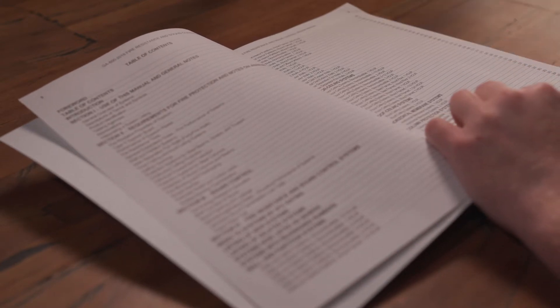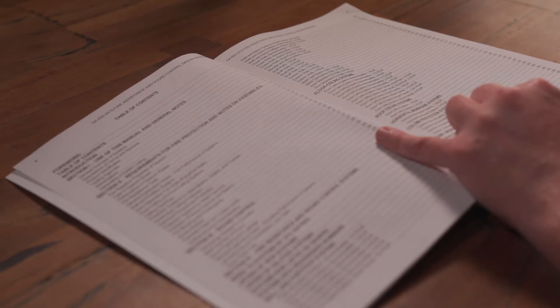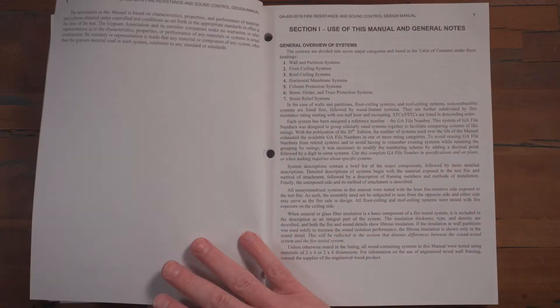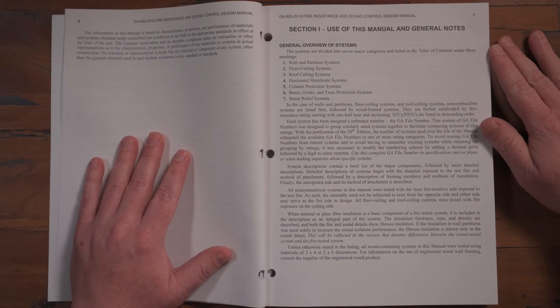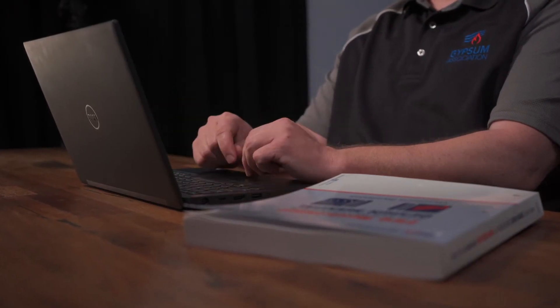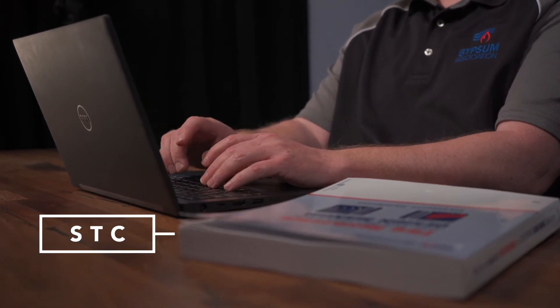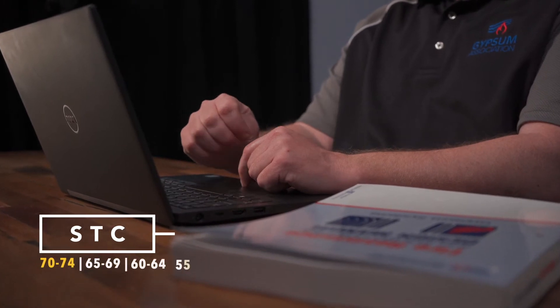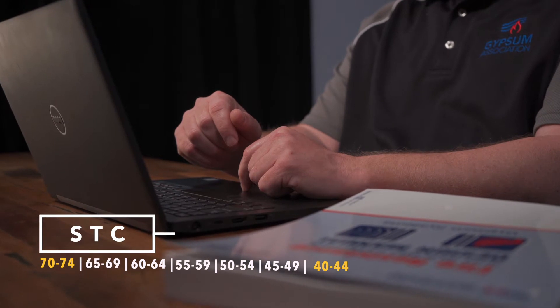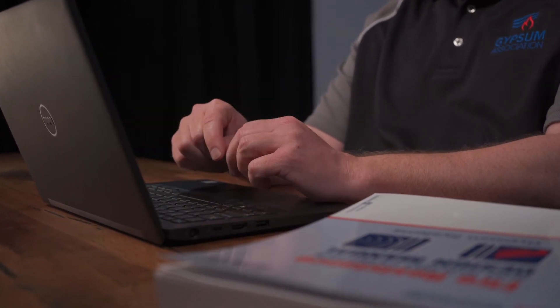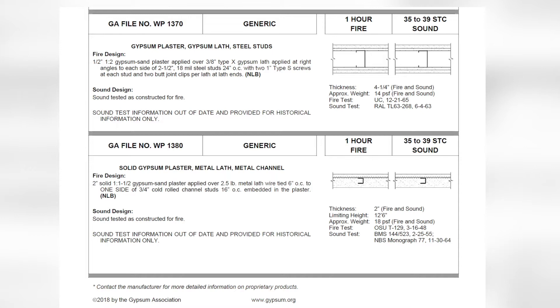Systems are further subdivided by fire resistance rating beginning with one-half hour and increasing to four hours. Walls, partitions, and floor ceiling systems are also classified by sound transmission class, abbreviated as STC. The impact insulation class is included for many floor ceiling systems. STCs are listed in descending order and range from 70 to 74 down to 40 to 44. In GA600 2018, STCs below 40 are excluded because these systems will not meet today's code criteria, though a few are retained for historical reference in renovation or restoration projects, as seen on pages 86 and 87.